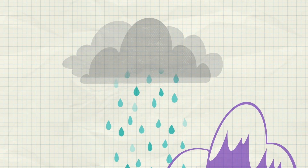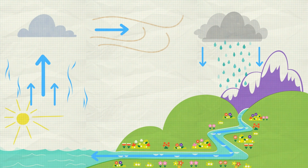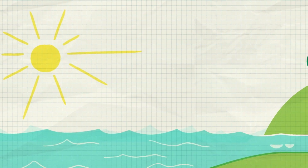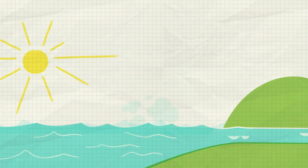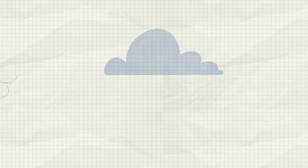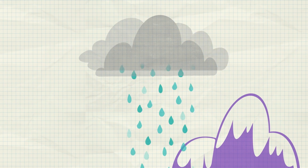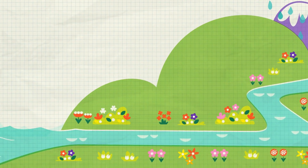Rain is part of the water cycle. The word cycle means circle. Some water on Earth travels in a circle — up into the air, moving with the wind, then down onto the Earth and back up again.